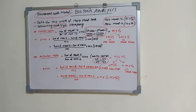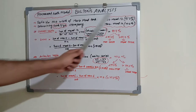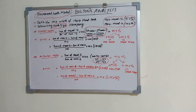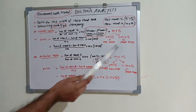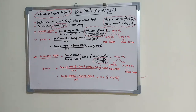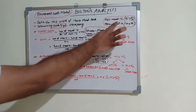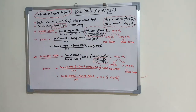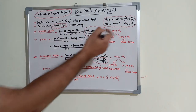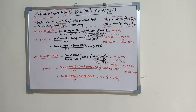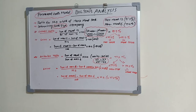Bolton's analysis is basically about understanding the tooth size discrepancy between maxillary and mandibular teeth. The two key percentages to remember are 91.3% for 12 teeth (molar to molar) and 77.2% for 6 teeth (canine to canine). That concludes Bolton's analysis, which is a permanent tooth analysis. I'll come up with another analysis in my next video — thank you.